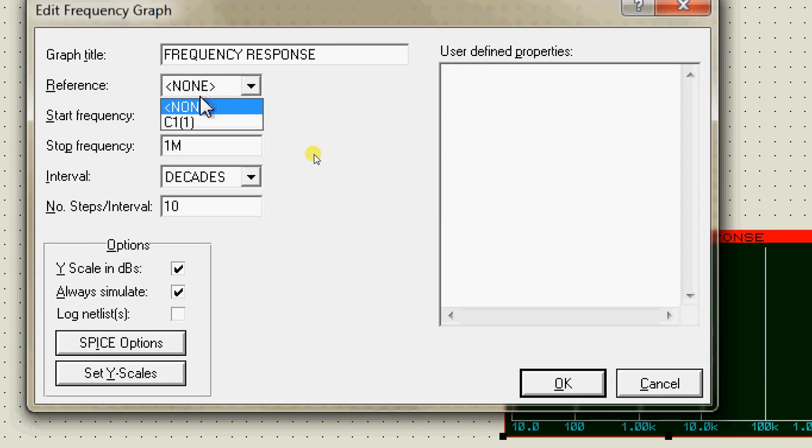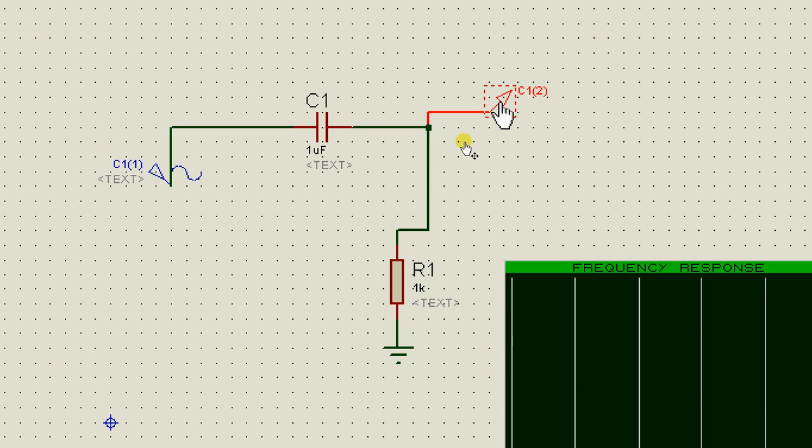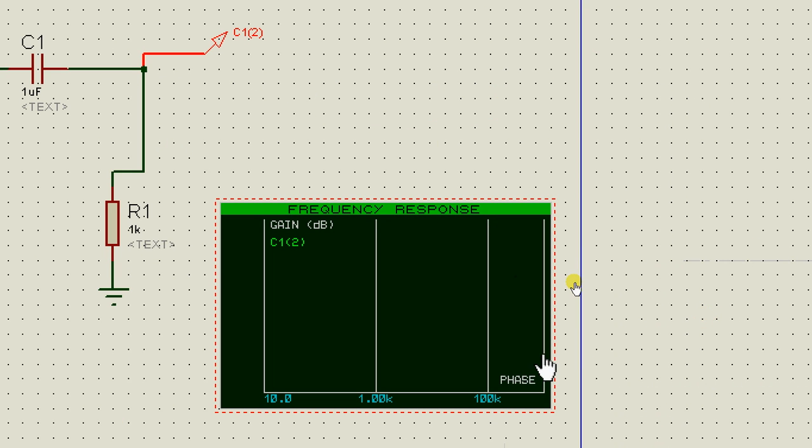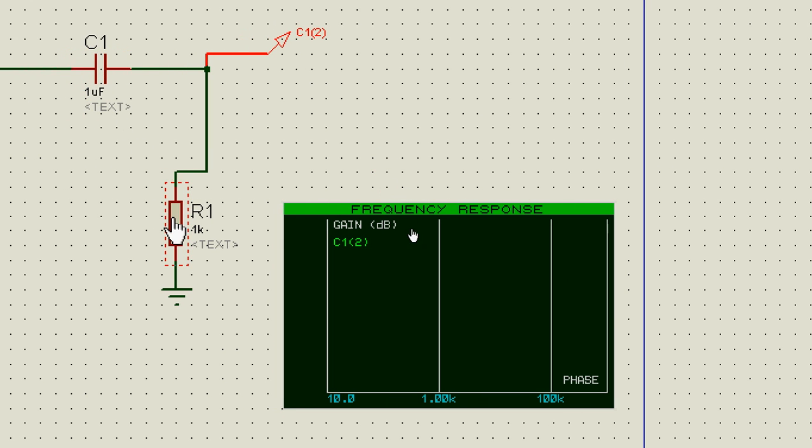So let me simulate this graph. Now I told you the cutoff frequency has the same formula and I've chosen the same values for C and R.